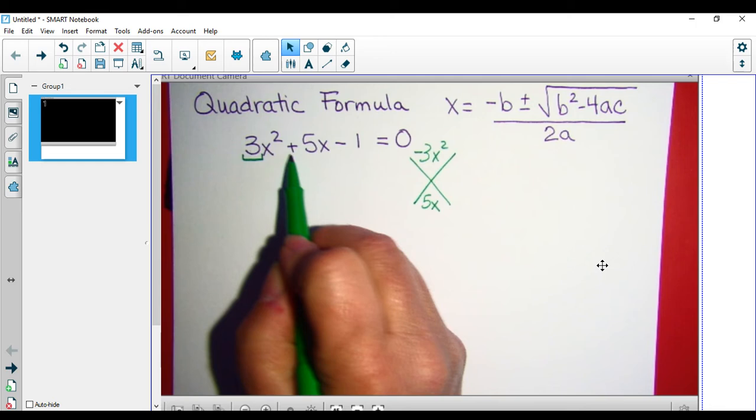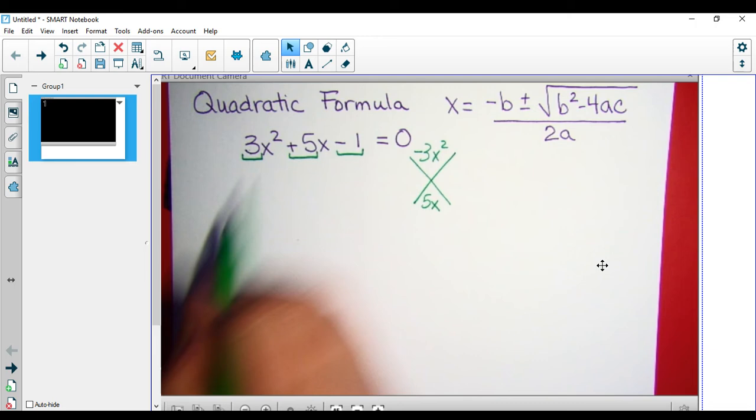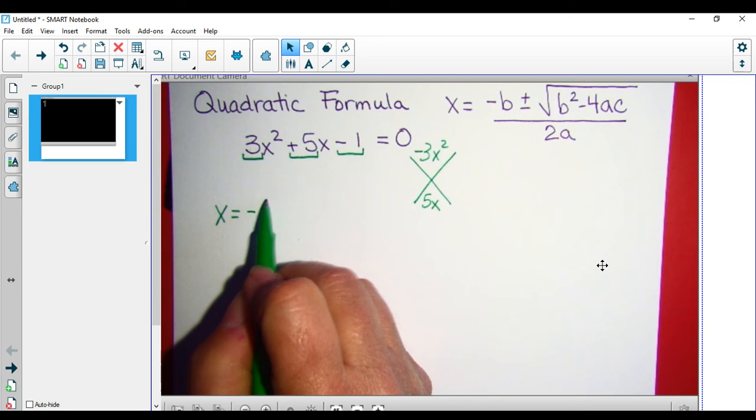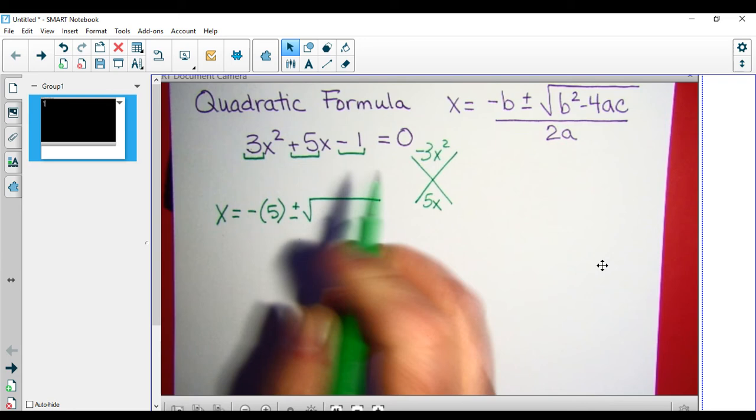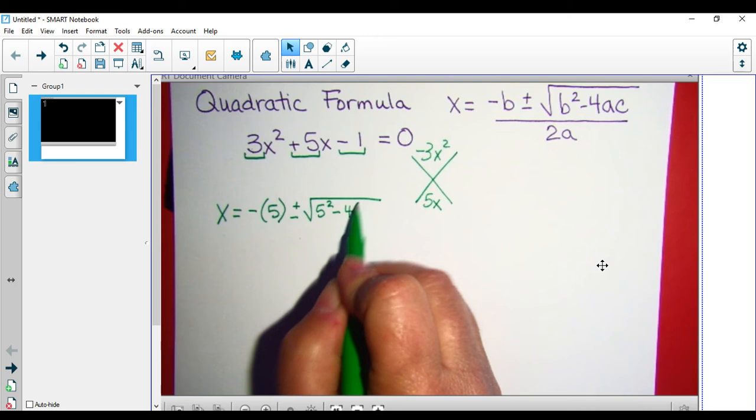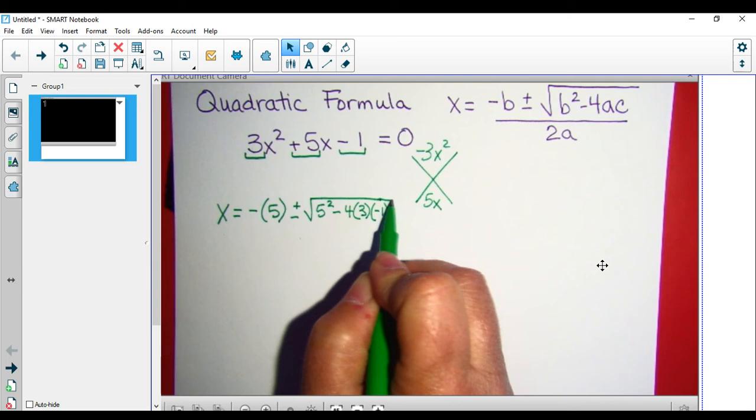A is 3, B is 5, C is negative 1. Substitute in the values. x equals negative b is 5, plus or minus the square root, b squared is 5 squared minus 4 times a is 3 times b is negative 1, all divided by 2a, which is 3.